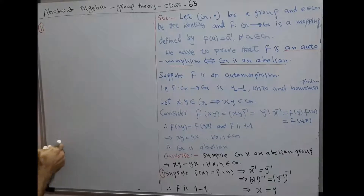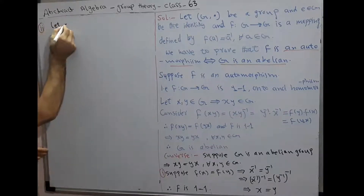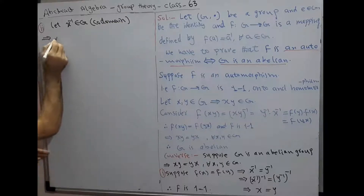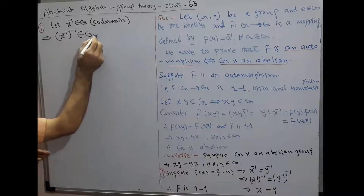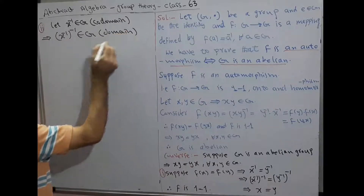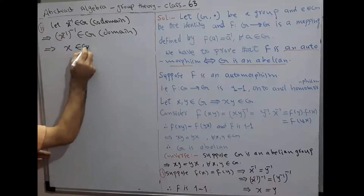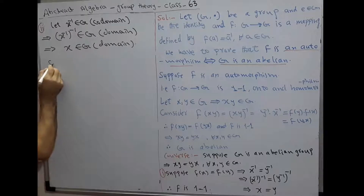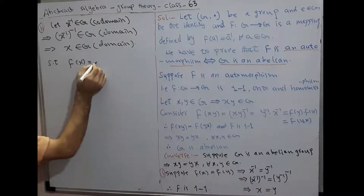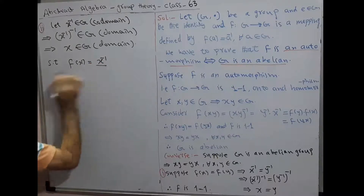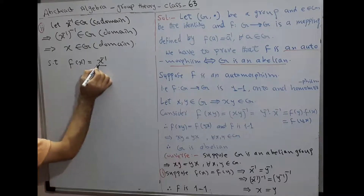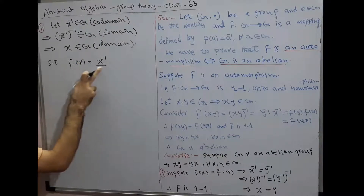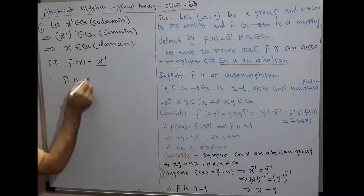Number two: let x⁻¹ belong to G from the codomain. Then there exists (x⁻¹)⁻¹ = x belonging to G from the domain, such that F(x) = x⁻¹. This means for every x⁻¹ in the codomain, there is an element x in the domain such that F(x) = x⁻¹. Therefore, F is onto.